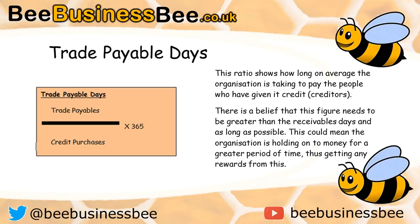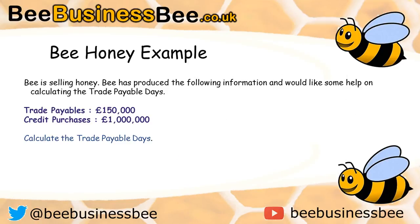This figure should ideally be greater than your receivable days, because it shows you're holding money in your business for as long as possible. If you want to be efficient, pay on the set terms — if given 30 days, pay on day 30. Paying earlier could mean you're not holding onto money that could earn greater rewards in a bank account. However, taking too long could damage your supplier relationship.